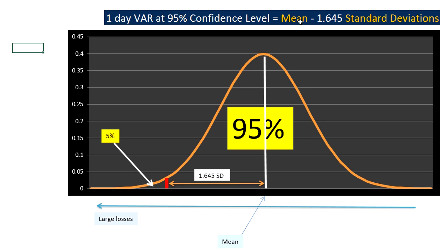You can see that when you use the parametric approach it's quite simple — you just need your mean and your standard deviation, and once you have those two you can calculate your VaR. However, most of the time you will underestimate your VaR; it will be lower than your historical simulation result, because you are assuming profits and losses follow a normal distribution, which is not the case in reality.